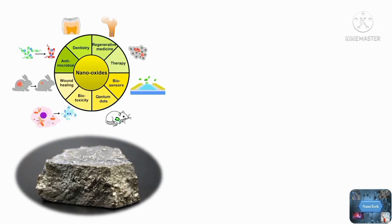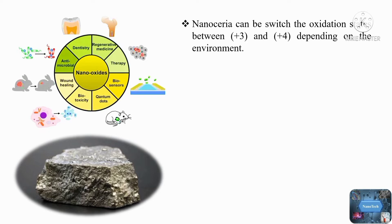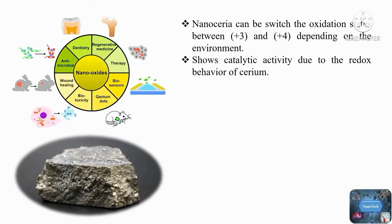Nanoceria is the most critical rare earth metal oxide because of its unique ability to transition between +3 and +4 oxidation states depending on the environment, and shows catalytic activity due to the redox behavior of cerium. It can adopt a fluorite crystalline lattice structure, which gives it a large reactive surface area for free radical neutralization.